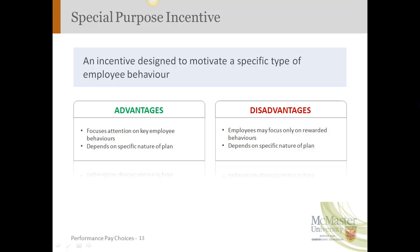Some examples might be bonuses paid to employees who score high customer satisfaction ratings from their customers. Things like suggestion systems, where employers are looking for employees to find ways to cut costs, increase revenues, offer better service, or improve particular programs. Employees might submit suggestions and the one that's picked is given some kind of reward.